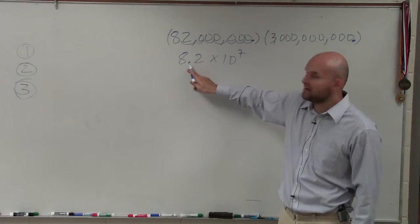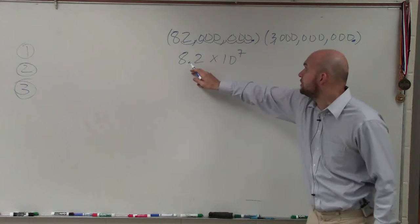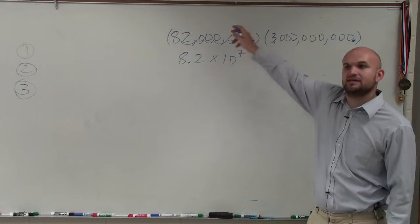It's a positive 7 because when I have 8.2, that means I need to move it over 7 units to the right to get to that answer.